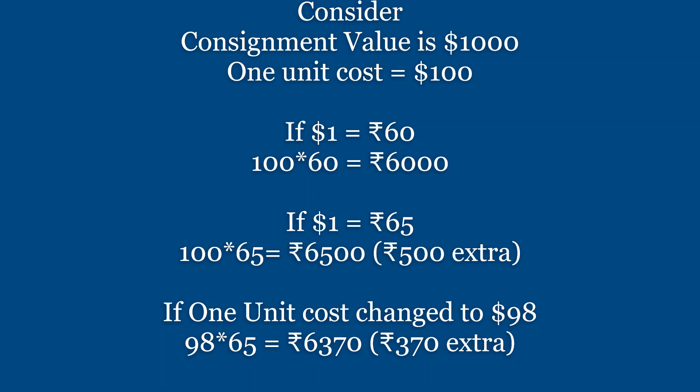Let me explain this with an example. The value of a particular unit of goods is $100. At an exchange rate of Rs. 60 per dollar, the exporter receives Rs. 6,000. After devaluation, the rate becomes Rs. 65 per dollar. For 1,000 dollars, the exporter will now be getting Rs. 65,000 — that is Rs. 5,000 extra.